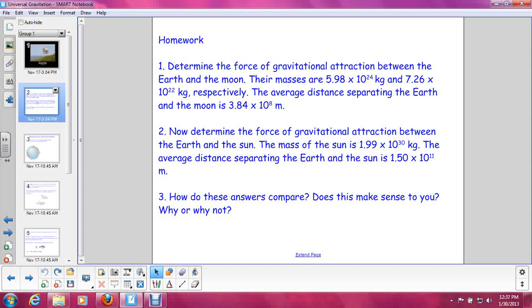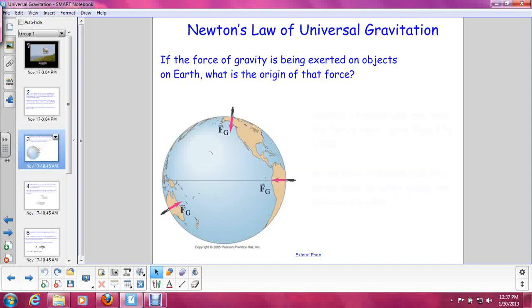So let's go ahead and get started and try and figure out how the heck we would solve a problem like this. First of all, we need to learn about Newton's law of universal gravitation. So far in this class, we know gravity is what keeps us and other objects on the Earth and not flying off into space. So if the force of gravity is being exerted on objects on Earth, what is its origin? Why are we attracted to the Earth?